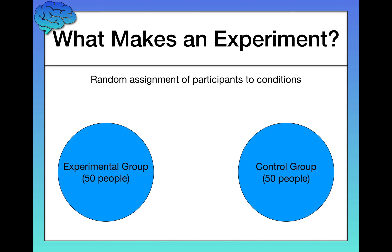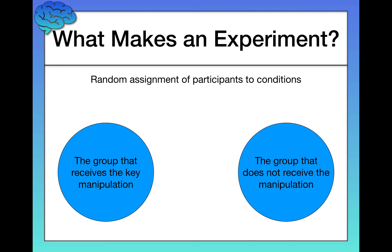These two terms are very important. The experimental group is the group that receives the key manipulation — your actual treatment of interest. The control group is the group that does not receive the manipulation. In this example, the experimental group would receive the depression medication, and the control group would receive a placebo that looks and tastes exactly like the actual medication but doesn't have any active ingredients. The control group should be matched as much as possible to the experimental group, but lacking that key treatment.